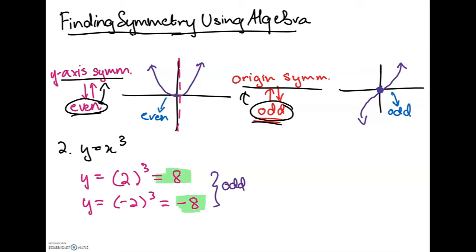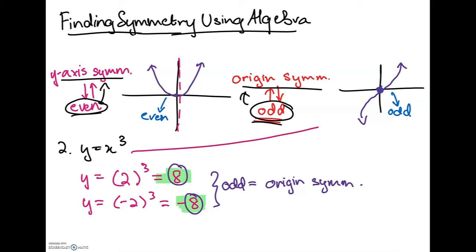When you get the same number but as positive and negative versions of each other — like positive 8 and negative 8 — the function is odd. Note: if you got something like negative 5 and 3, it's neither even nor odd. But here, since the function is odd, it has origin symmetry — it is symmetric across the origin. The graph I drew is the graph of y = x³.